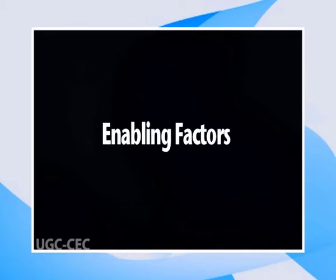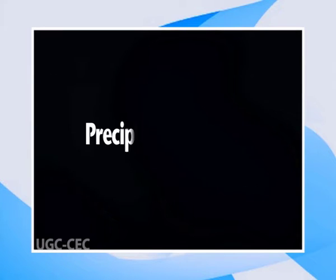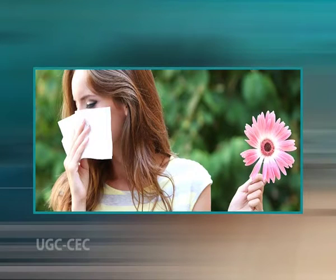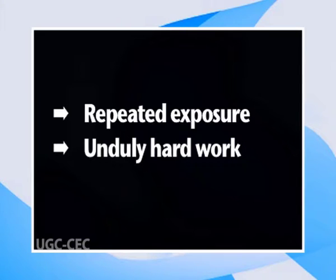Second are enabling factors: environmental conditions which favor the development of disease, for example low income, poor housing, poor nutrition, inadequate medical facilities. Third are precipitating factors: specific or noxious agent exposure to which can be associated with the onset of a disease, for example pollen in an asthmatic attack. Fourth are reinforcing factors: factors which aggravate an already established disease or state, for example repeated exposure and unduly hard work.